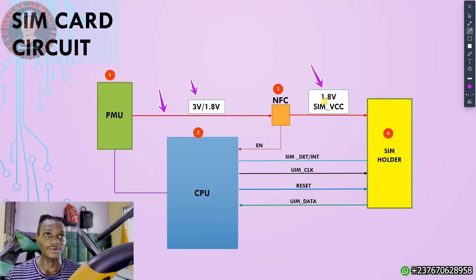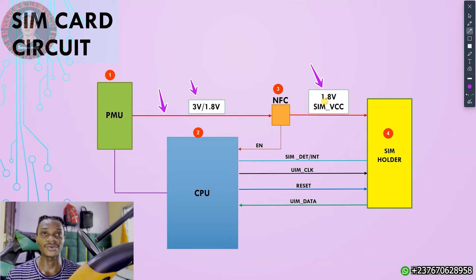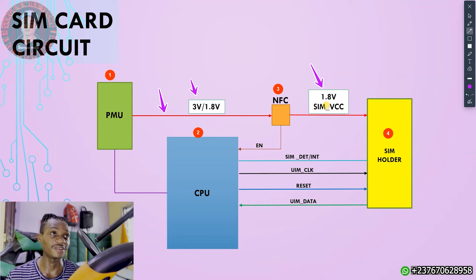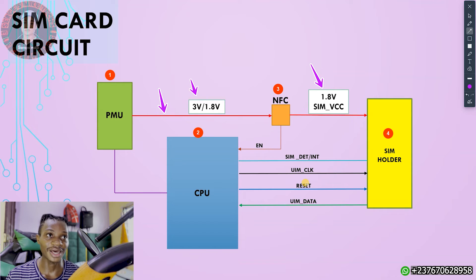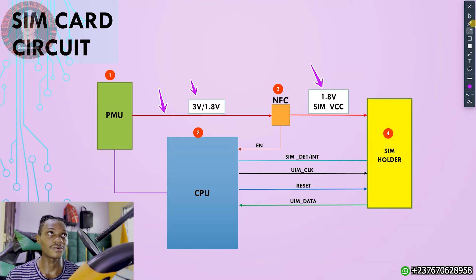Before understanding the voltage path from PMU IC to NFC and from NFC to the SIM card, you need to know how this voltage is enabled, because it is not a standby voltage in most phones. We have the SIM VCC, which is the main voltage that gets into the SIM card. We also have the SIM card detect pin, or interruption pin, the SIM card clock signal, the SIM card reset signal, and the UIM data pin, which is the data pin.